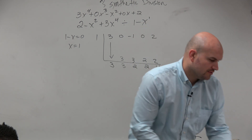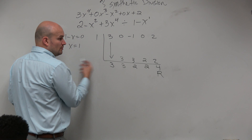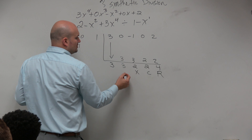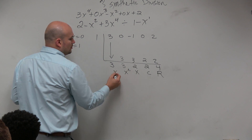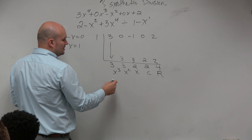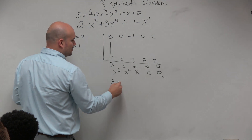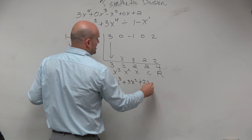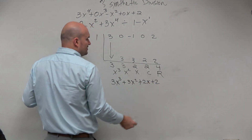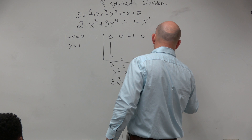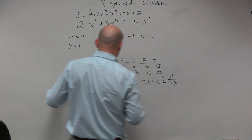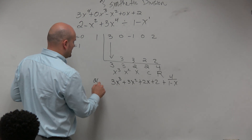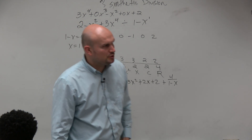I just said divide. So remember, to find our quotient: goes remainder, constant, coefficient of our linear, coefficient of our squared, coefficient of our cubic. Our quotient is 3x cubed plus 3x squared plus 2x plus 2. And then always take the remainder and put it over your divisor. That would be our q of x.